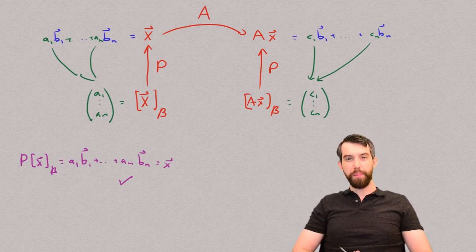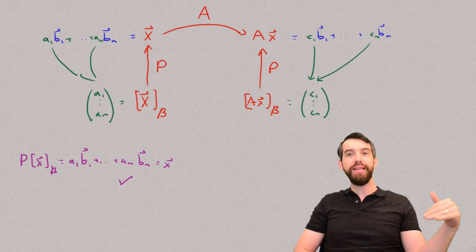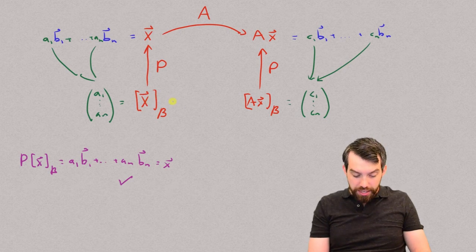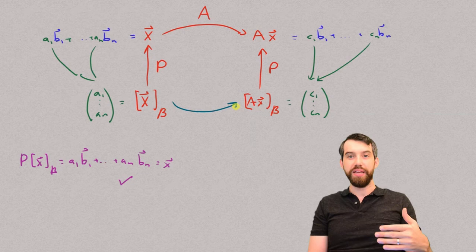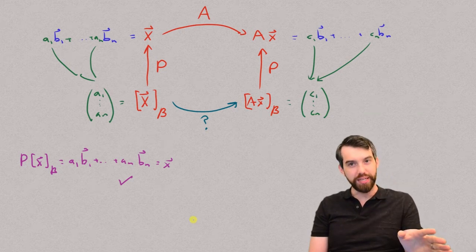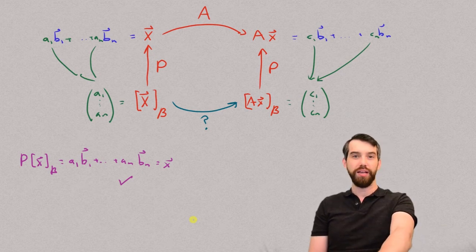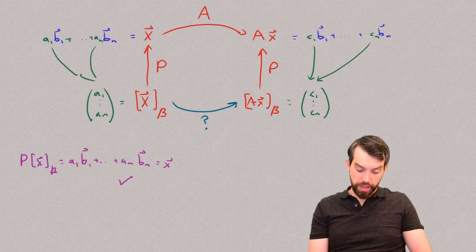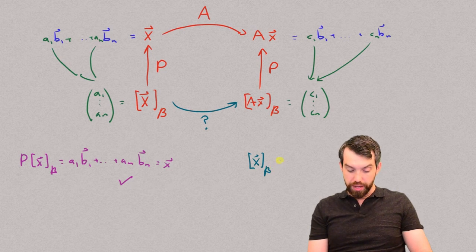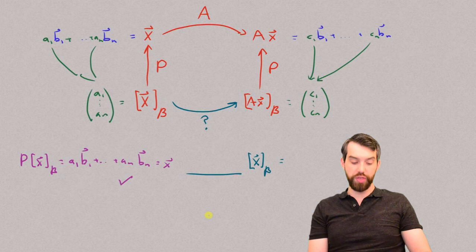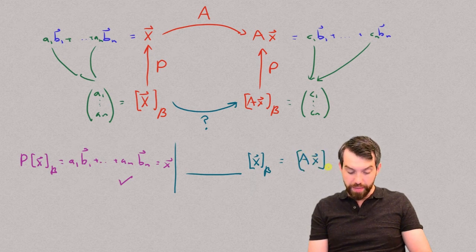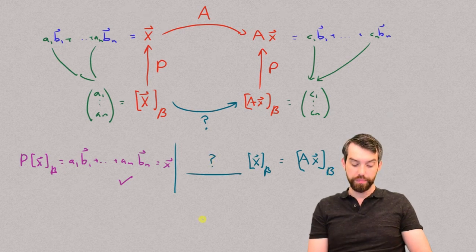So now let's return to the main problem. What I'm going to now ask is how do I connect along the bottom? If I have a vector x written in my B basis, and I want to get over to the vector Ax written in the B basis, the question is, what is the matrix that represents that transformation? The transformation that takes x written in the B basis to Ax written in the B basis. It's not the matrix A because the matrix A was going to apply when we had these written in the standard basis. So that is the key question that I'm trying to ask.